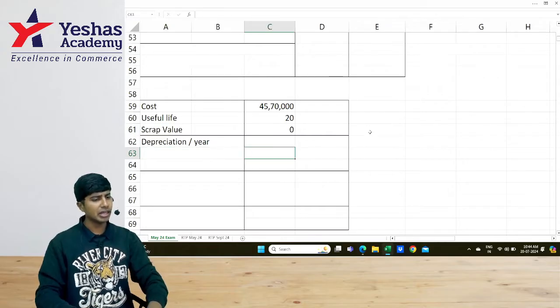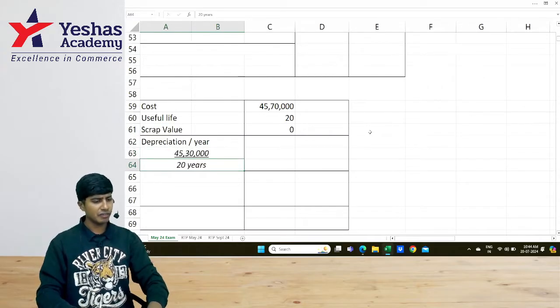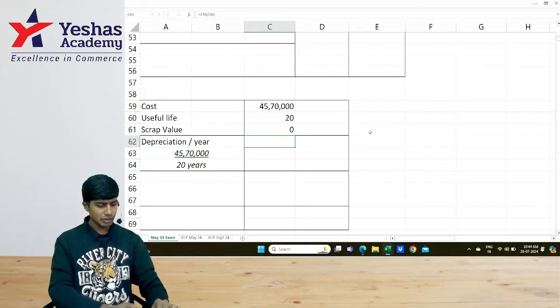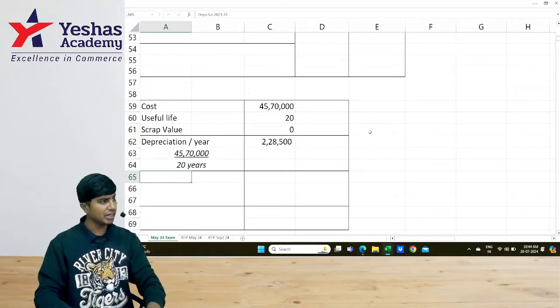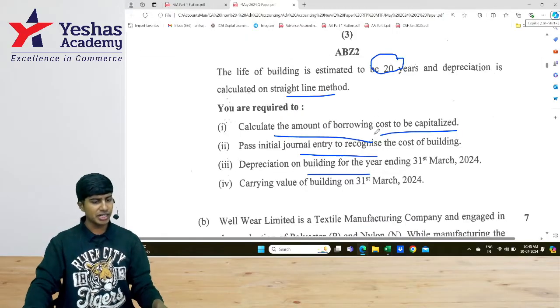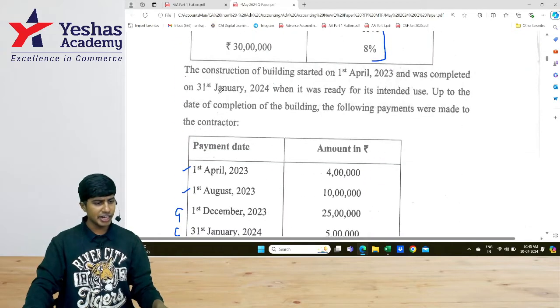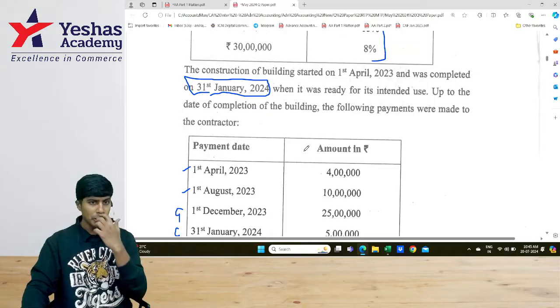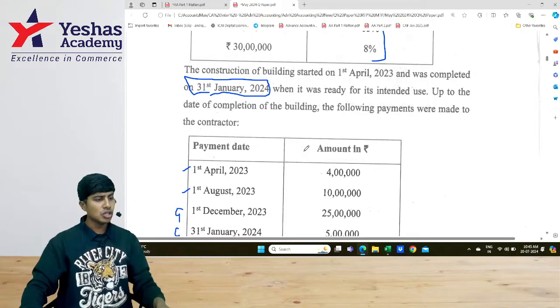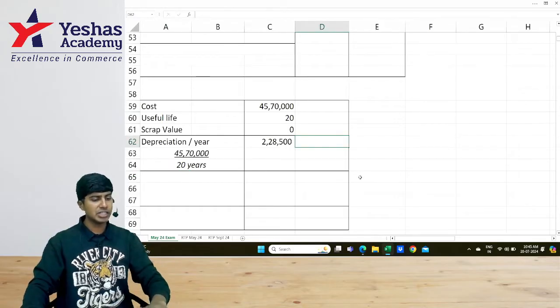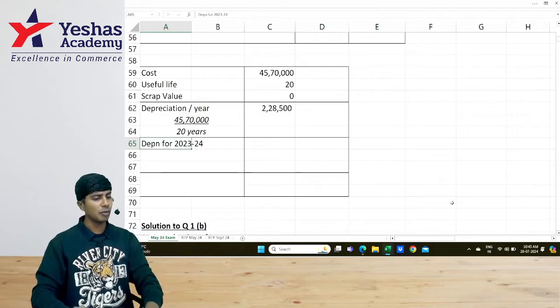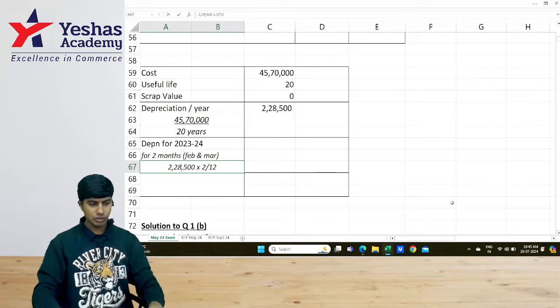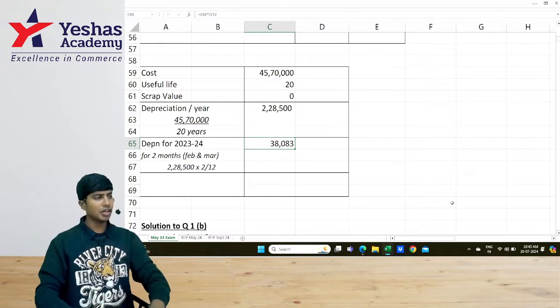₹45,70,000 will be the cost and our useful life is 20 years. Scrap value is 0. What is the depreciation? ₹45,70,000 minus 0 divided by 20. We have ₹45,70,000 divided by 20, what do we get? ₹2,28,500 is depreciation. When did we construct that building? When is it ready for utilization? It is ready by, completed on 31st of January. Not even first, 31st of January. So, during 2023-24, building is ready for use only for 2 months, February and March. So, depreciation of ₹2,28,500 is per annum. How much is depreciation for 2023-24? I will do ₹2,28,500 into 2 by 12. ₹38,000. This is the depreciation for that year.